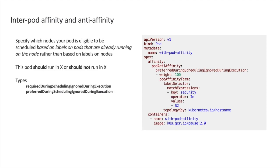Pod affinity and anti-affinity is similar to node affinity, but now you can specify where a pod should land based on the labels of already existing pods. For example, you can require your frontend pod to land on the nodes where your backend pods are. It also has the same rules as node affinity.